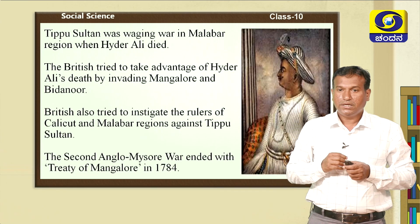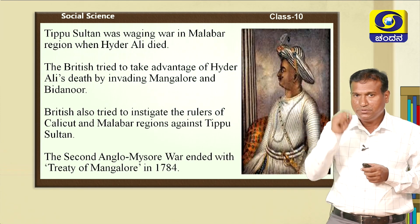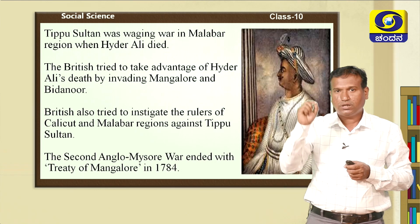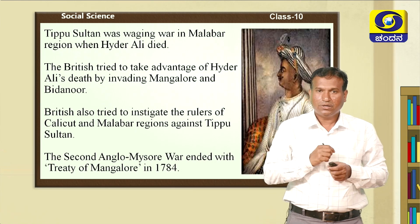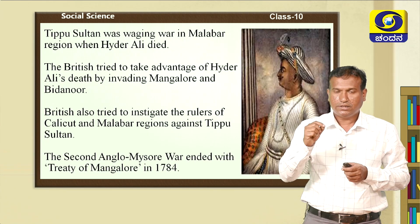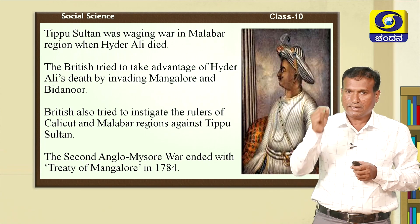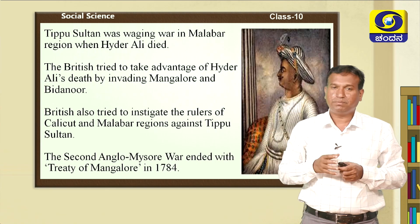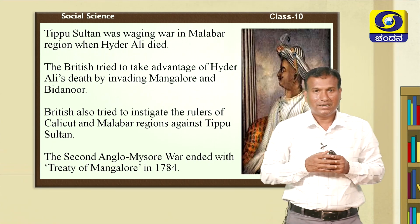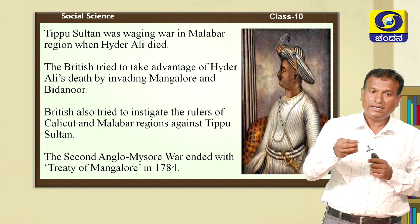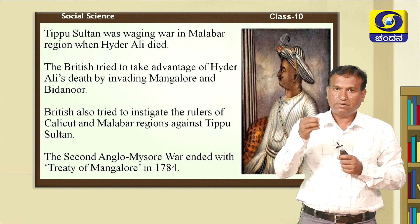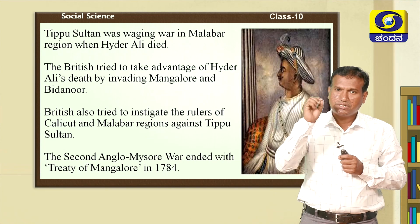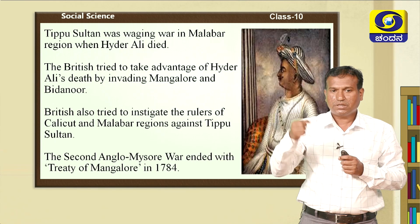Tipu Sultan defeated the English at Mangalur. When he defeated the English at Mangalur, the English immediately came forward for a peace treaty, because they realized Tipu Sultan was very powerful. That is why the Treaty of Mangalur was signed in 1784. The terms of the Treaty of Mangalur were the same as the Treaty of Madras — the same three conditions: exchange of war prisoners, exchange of captured territories, and mutual help when attacked by an enemy.